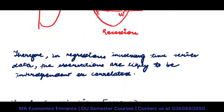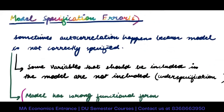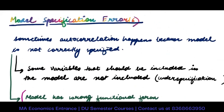Therefore, in regression involving time series data, observations are likely to be interdependent and correlated. The second reason for autocorrelation is model specification error.